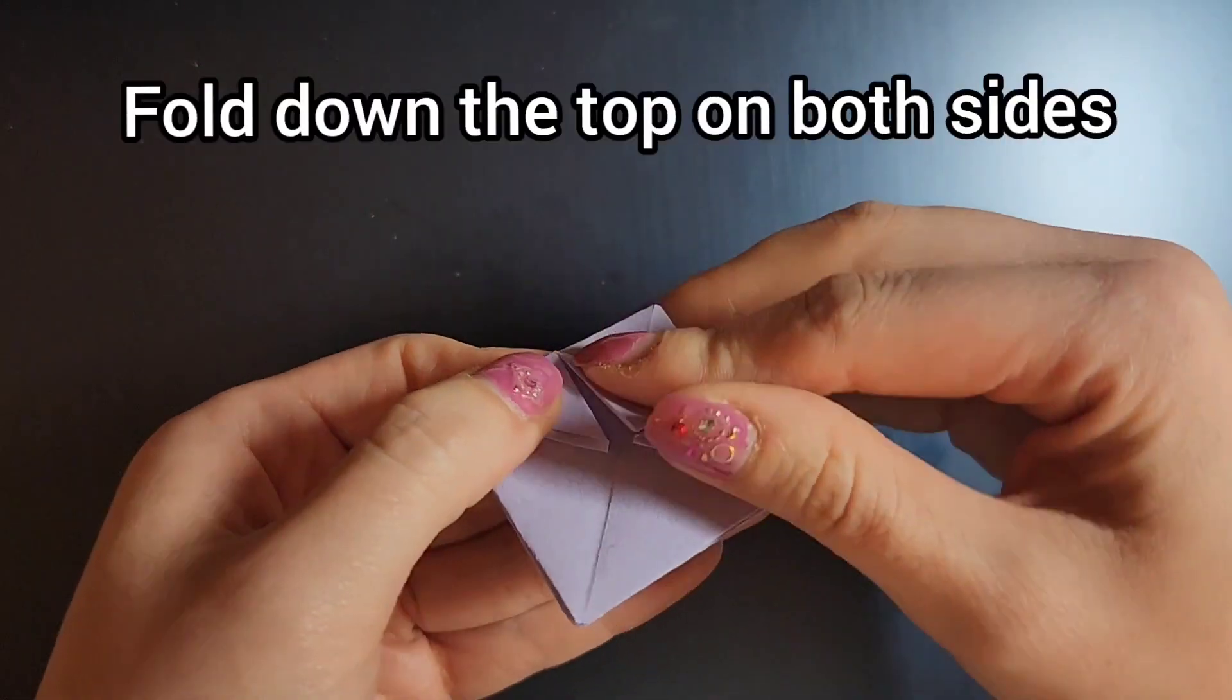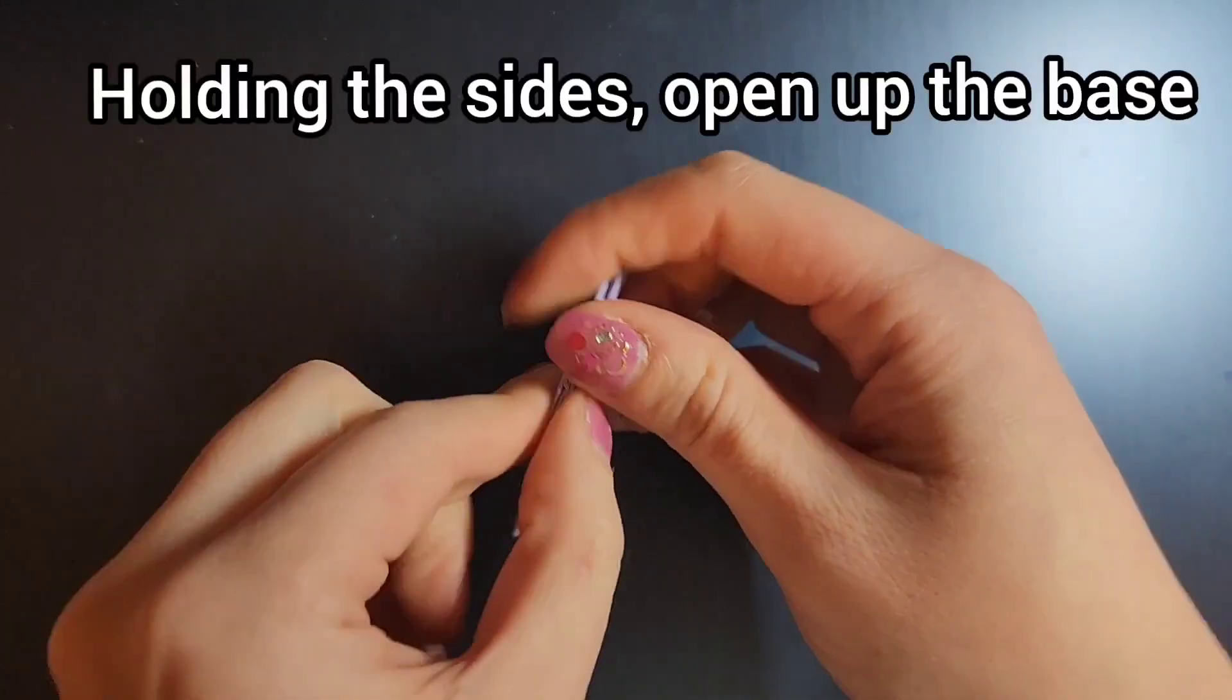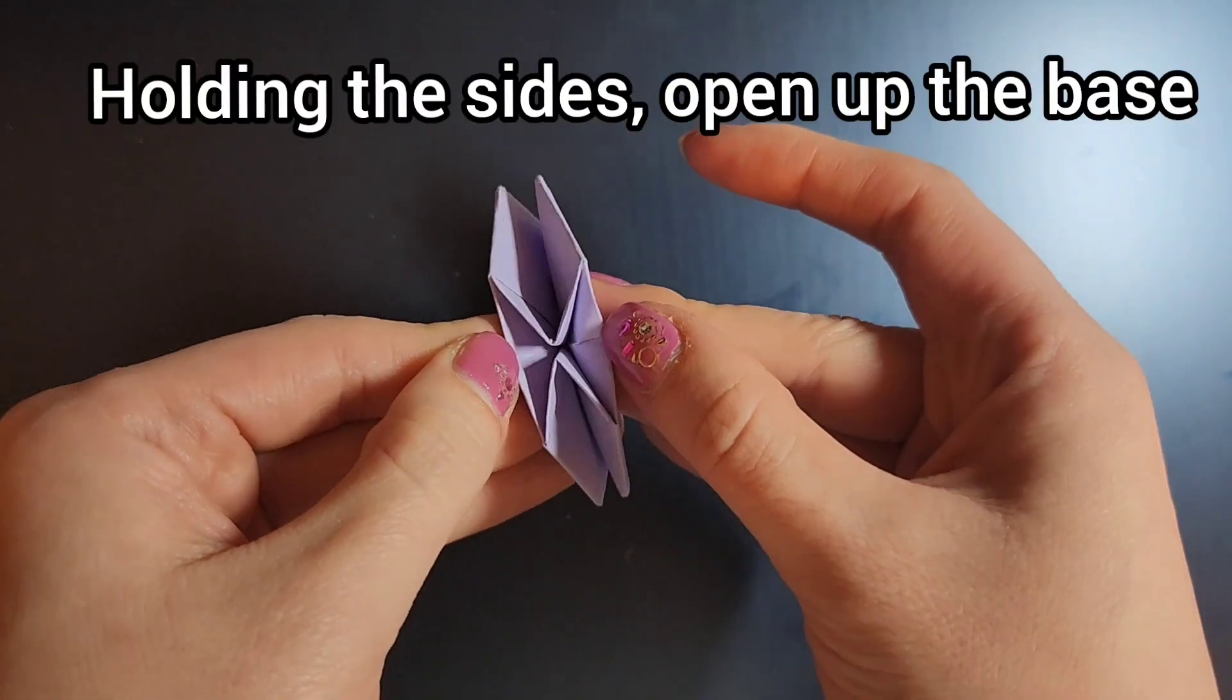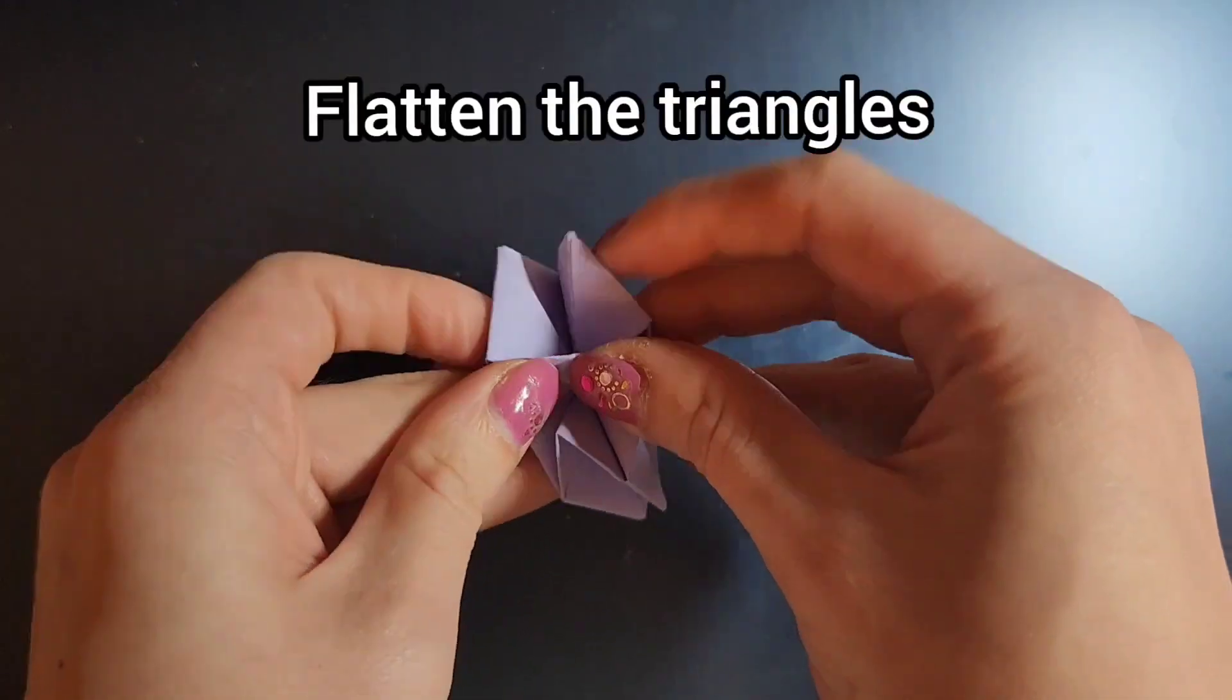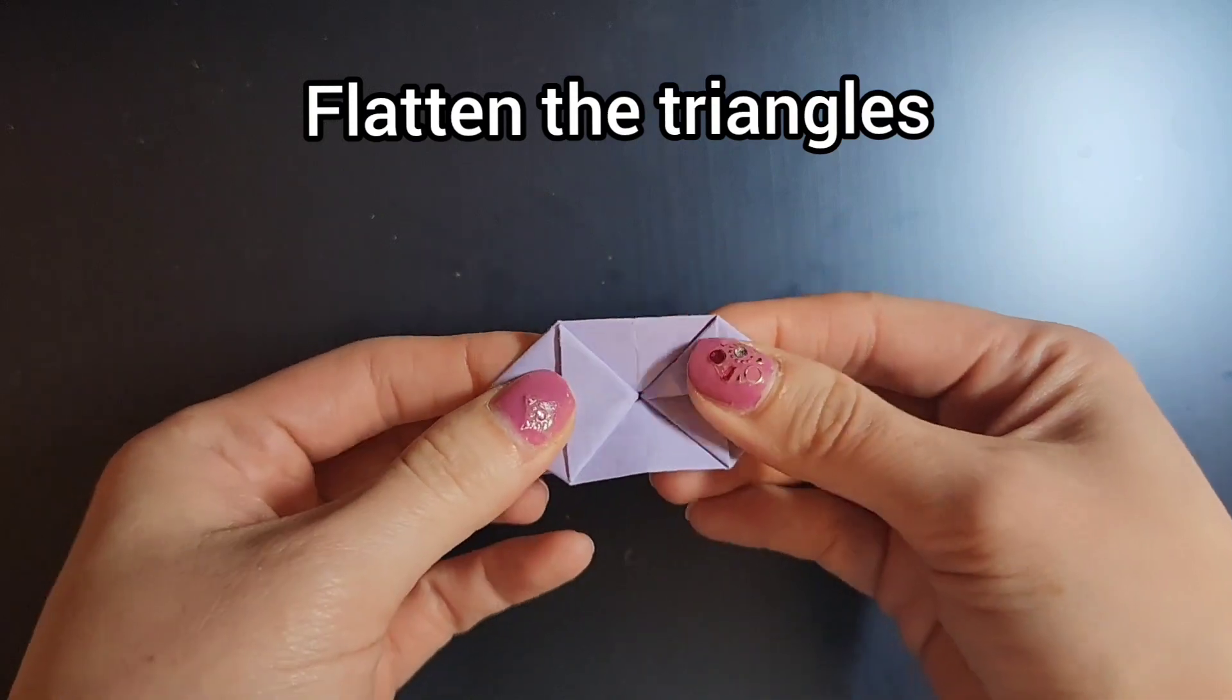Take that center piece and fold it down and do this on both sides. Now you want to open up the base. Hold the sides and use your nails to open this part up. And then flatten the triangles. This is going to form your base.